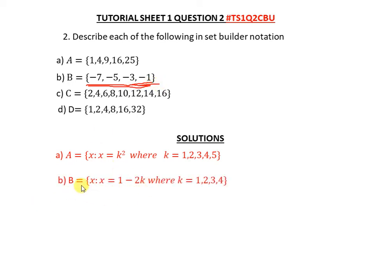The simplest way I found for part B is: x is such that x = 1 − 2k, where k = {1, 2, 3, 4}. When you put k = 1: 1 − 2 = −1; k = 2 gives −3; k = 3 gives −5; k = 4 gives −7. That matches the set exactly.